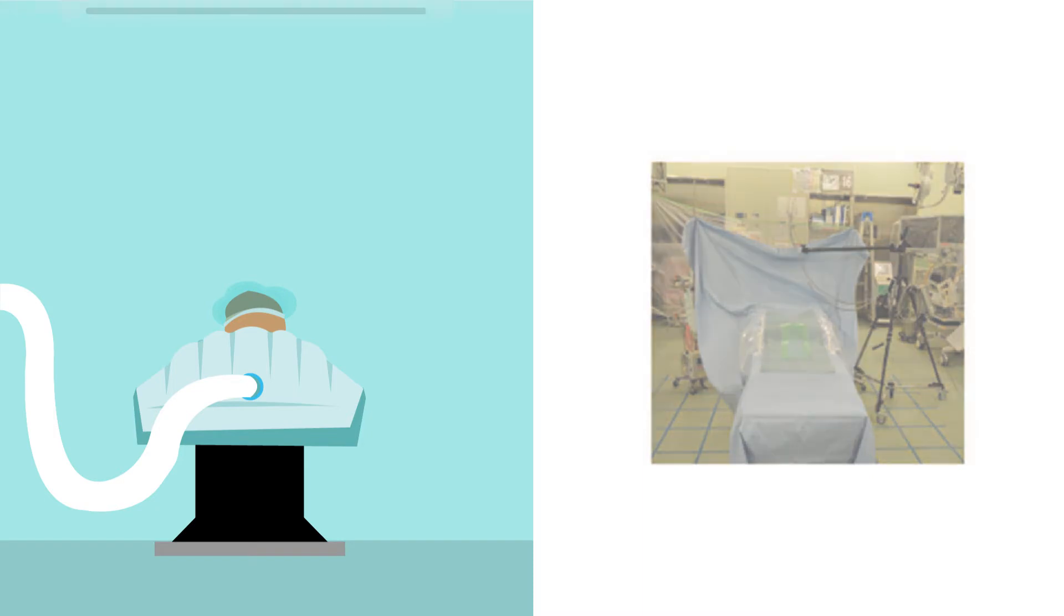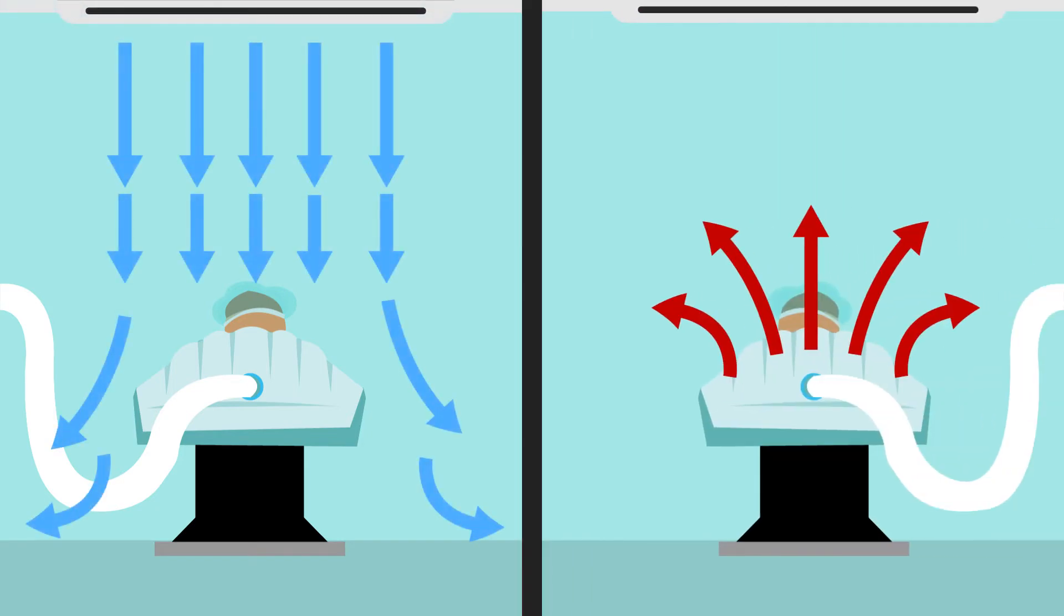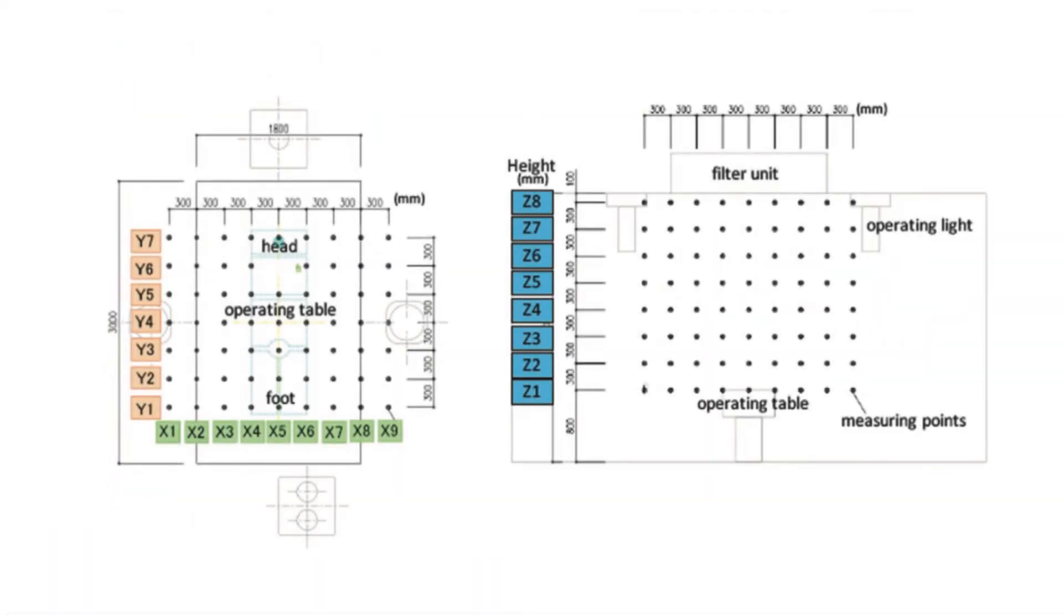The team then assessed the airflow in the room with and without forced air warming and in the presence and absence of laminar flow. Air speed and direction were measured at 504 different points in the room.